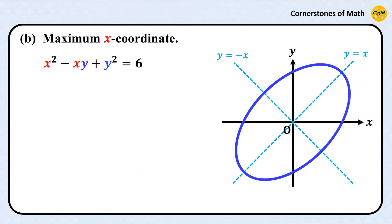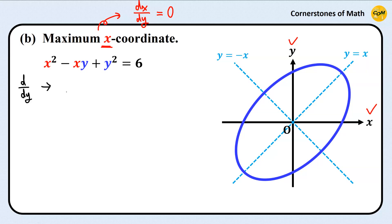Next, the point with maximum x-coordinate. The process is quite similar. This time, we consider y as an independent variable and x as a dependent variable — that is, we consider x as a function of y. Then, if the x-coordinate reaches its maximum, its derivative with respect to y, dx over dy, must be 0 at that point. So, we find dx over dy by differentiating with respect to y.